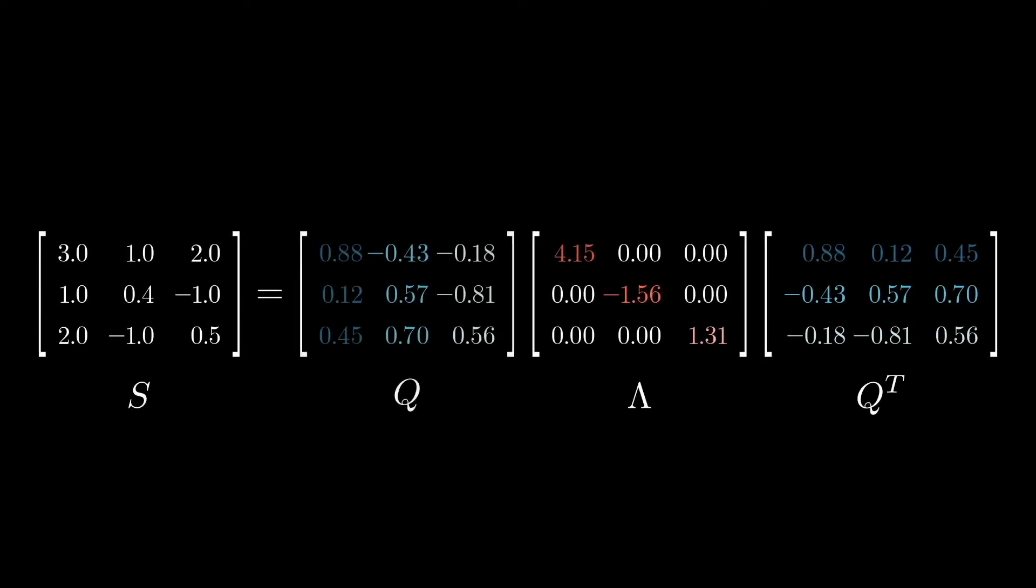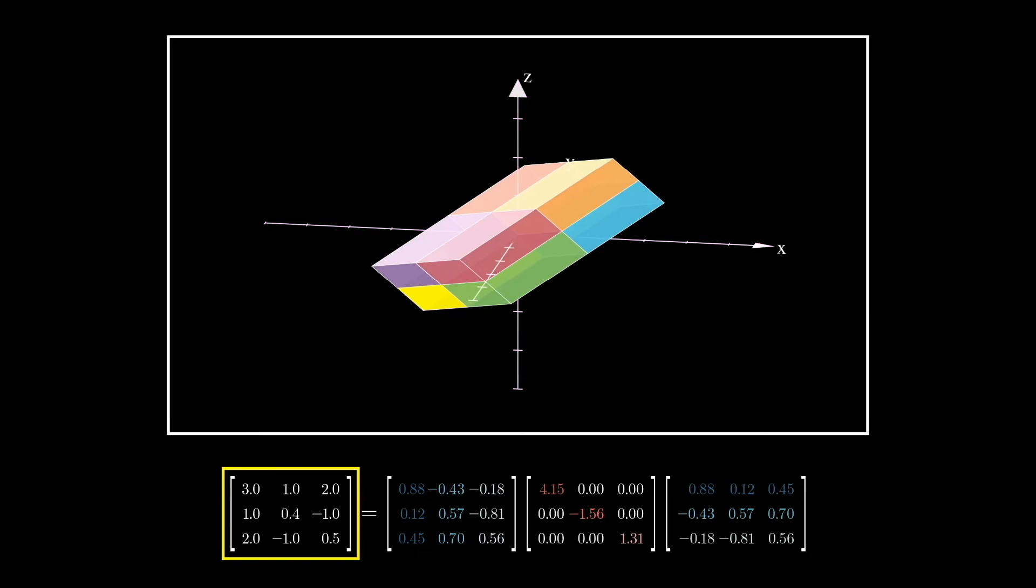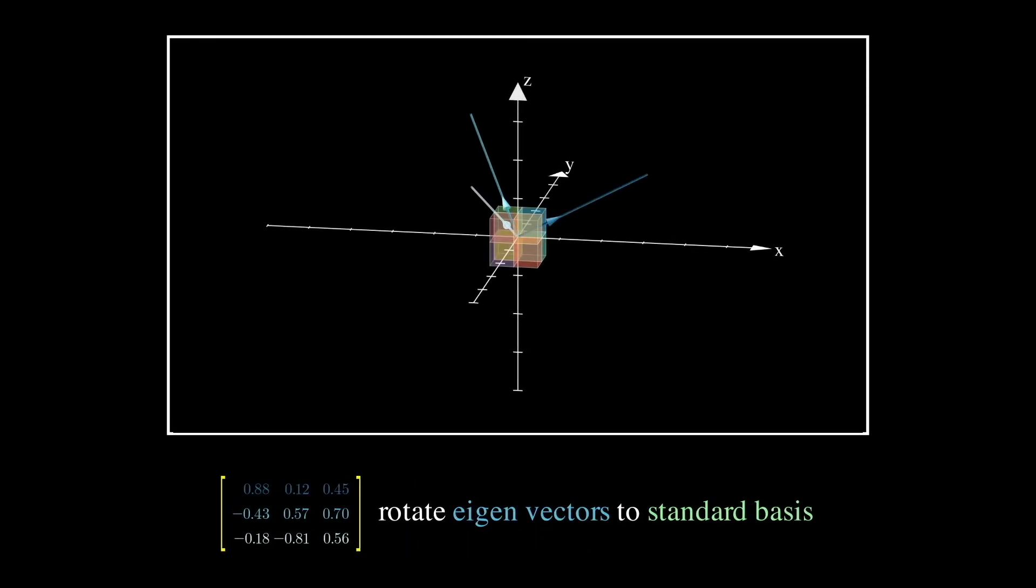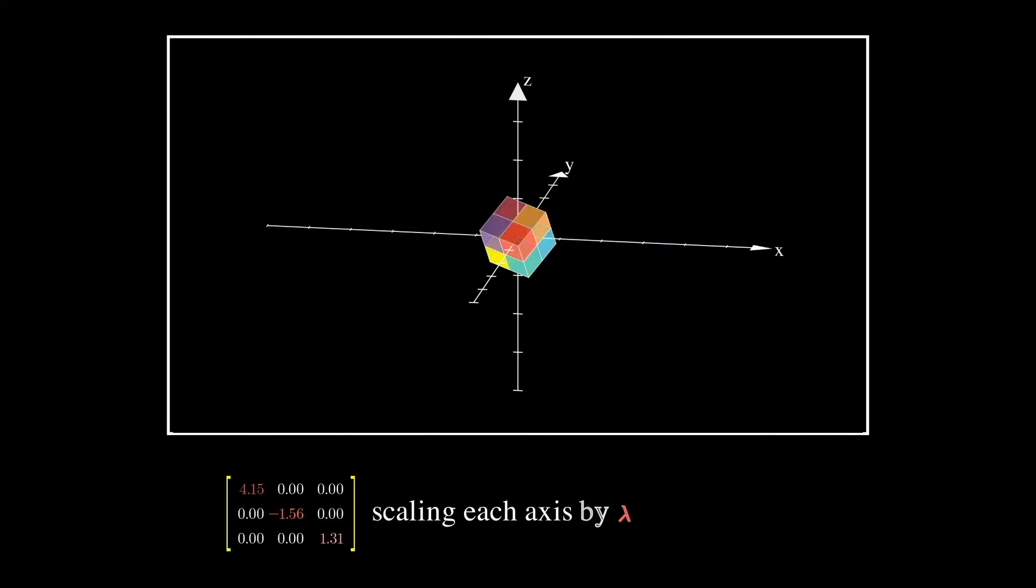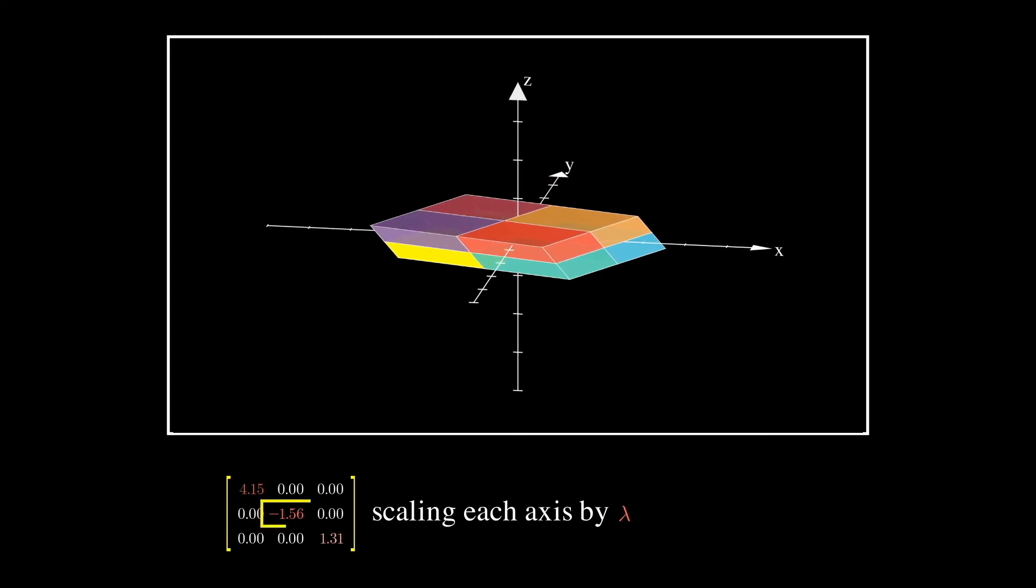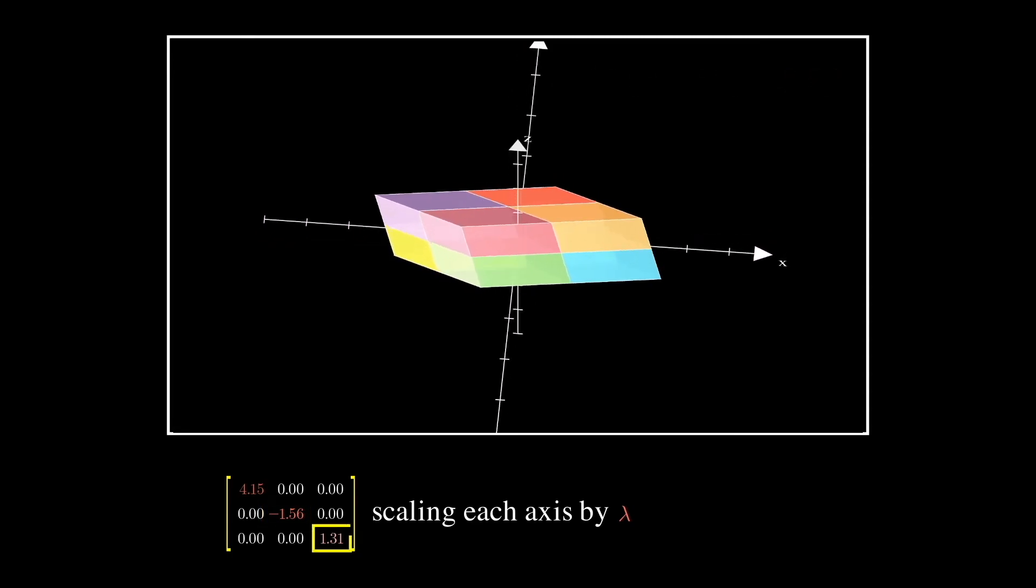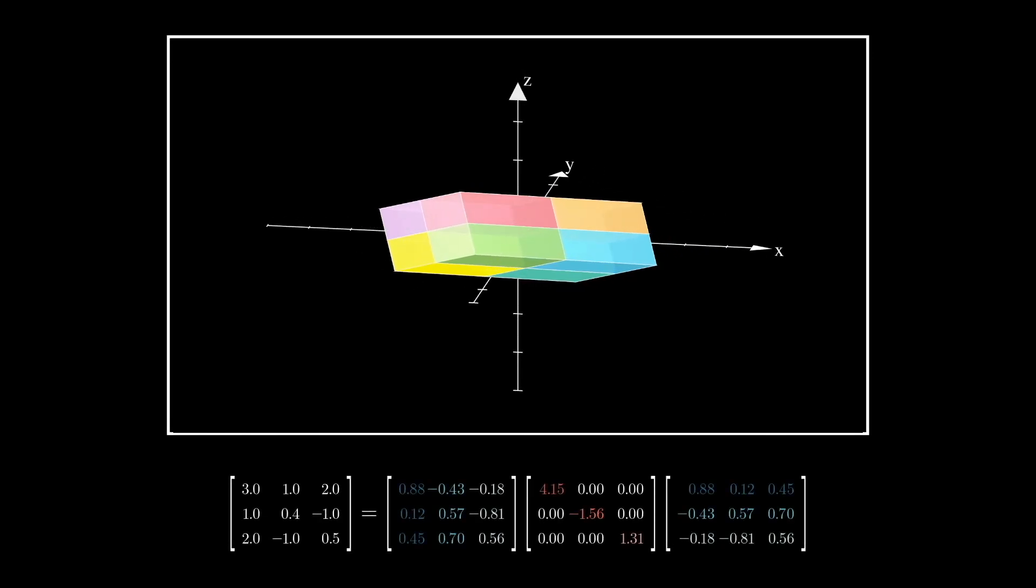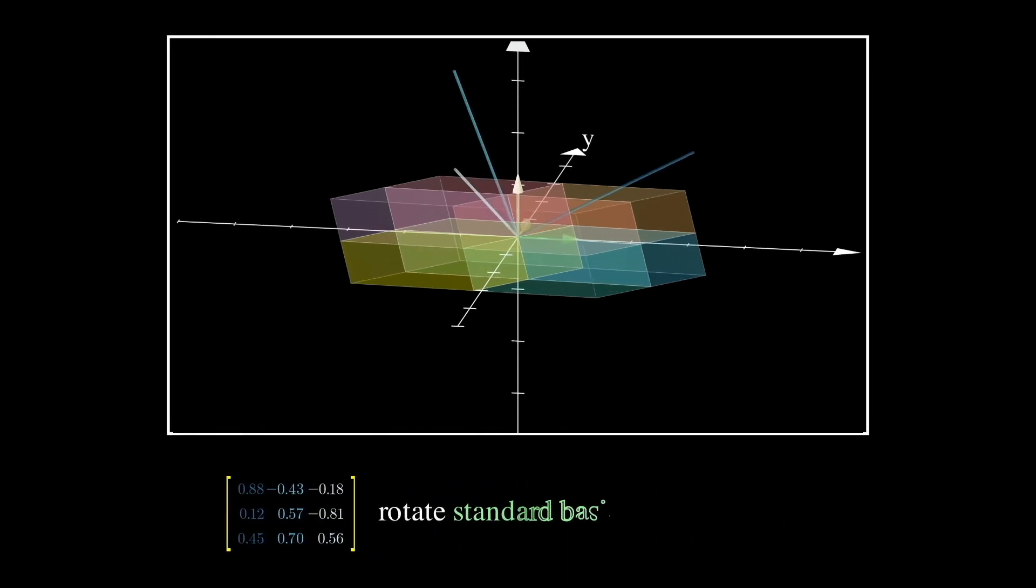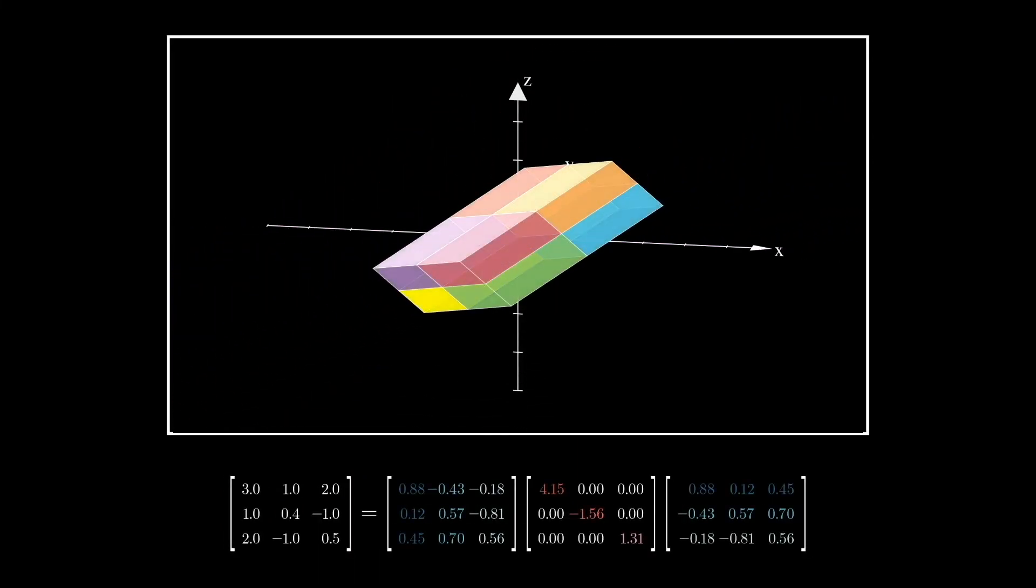Likewise, we can also apply a spectral decomposition on a 3x3 symmetric matrix. Let's look at what happens to the tiny color cube under S. We also know this transformation is exactly the same as the three sequential transformations on the right. First, we identify the three perpendicular eigenvectors of matrix S, and rotate them onto the standard basis. Secondly, we scale the x-axis by 4.15, y-axis by minus 1.56. Since it's a negative scaling factor, vectors are going the reverse direction by the magnitude, and then a tiny bit stretching on z-axis by 1.31. In reality, matrix lambda does three scalings simultaneously. I'm just breaking them apart so it's easier to see. And thirdly, a rotation backwards from the standard basis to the eigenvectors. And the transformations we just witnessed is exactly the same as S.